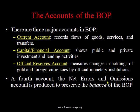The net errors and omissions account preserves the balance of balance of payment. If there is any discrepancy or disequilibrium due to any error in recording or omission, the value creating that disequilibrium would be recorded in net errors and omissions so that balance of payment remains in balance. This fourth account captures errors and omissions.